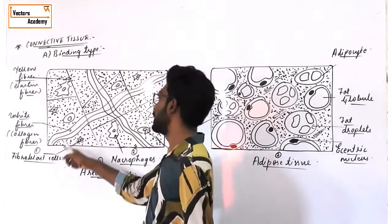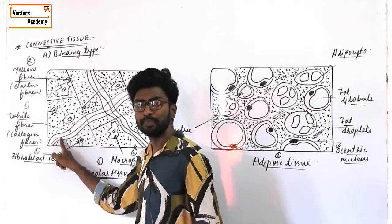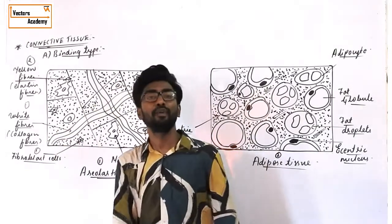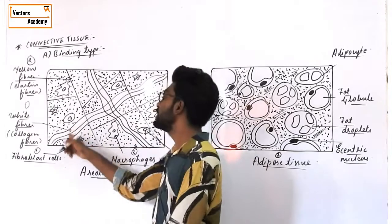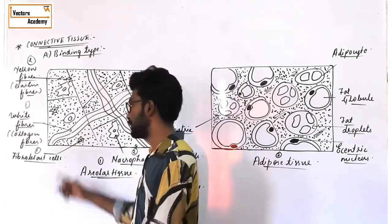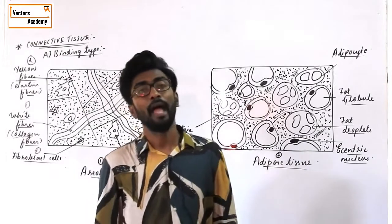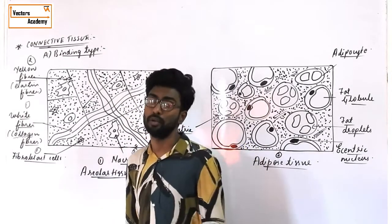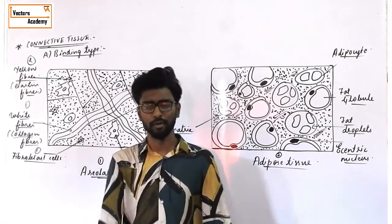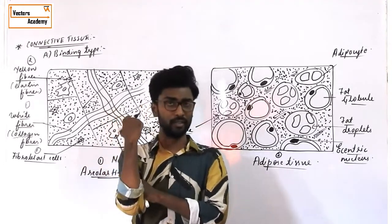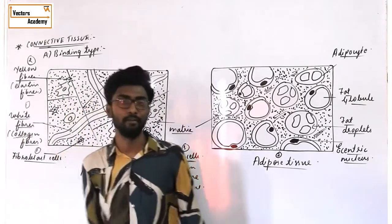There are two types of fibers. The first is white fiber — white fibers are wavy and unbranched. They are made up of a protein called collagen, which is why they are also called collagen fibers. White fibers or collagen fibers are responsible for the formation of tendon. A tendon is the connection between bone and muscle.